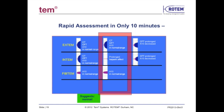In the next example, Extem is normal, Intem demonstrates a prolonged CT, and FibTem shows normal amplitude at A10. To determine the reason that the CT in Intem is prolonged, a Heptem was performed. The normalization of the tracing in Heptem compared to Intem confirms that it was a heparin effect.